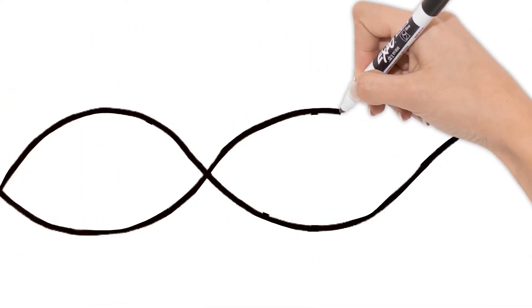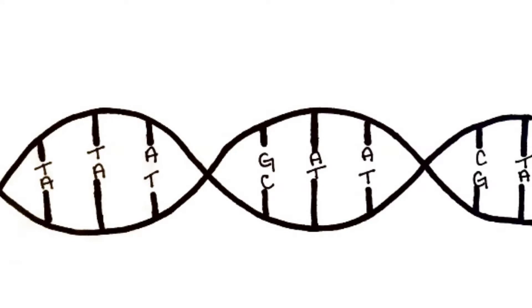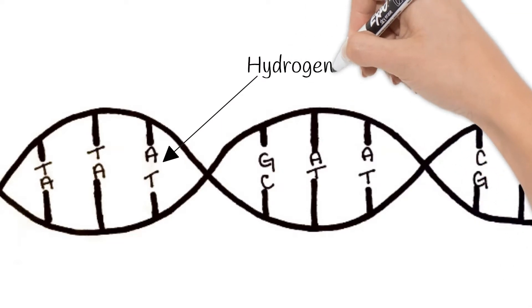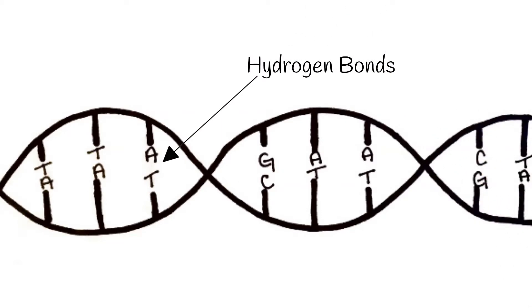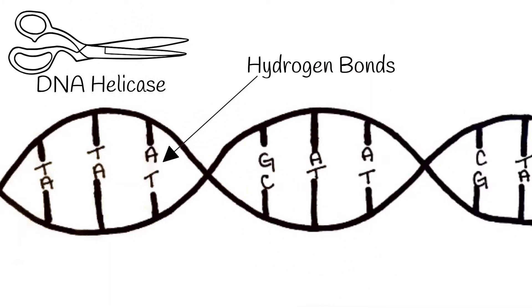Remember DNA is a double helix, so first a section of DNA has to be unzipped so that we can get to the bases inside. There are hydrogen bonds between the bases of the two strands, and an enzyme called DNA helicase acts like a pair of scissors breaking those bonds, allowing the double helix to open.